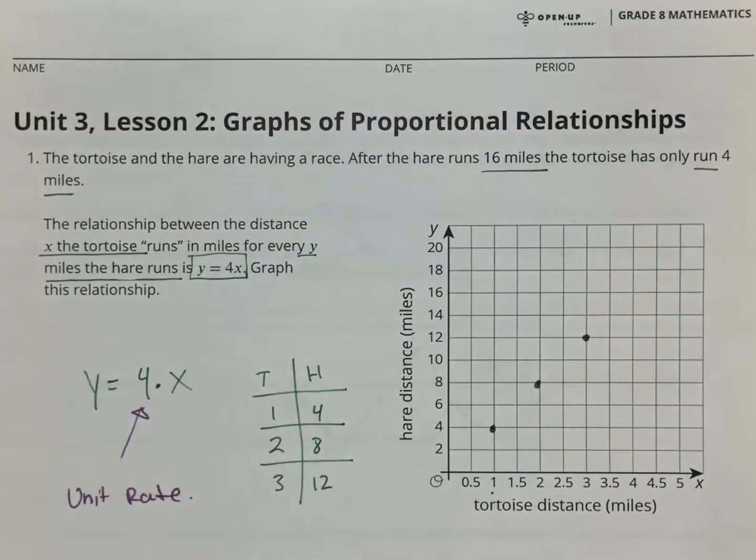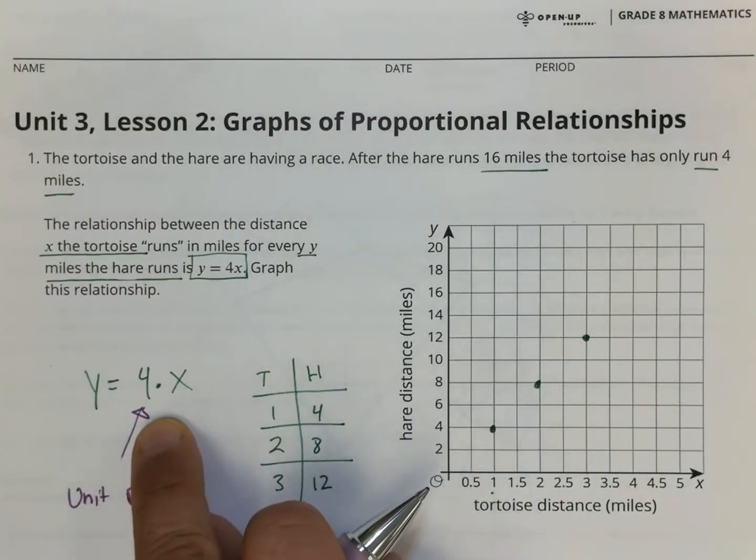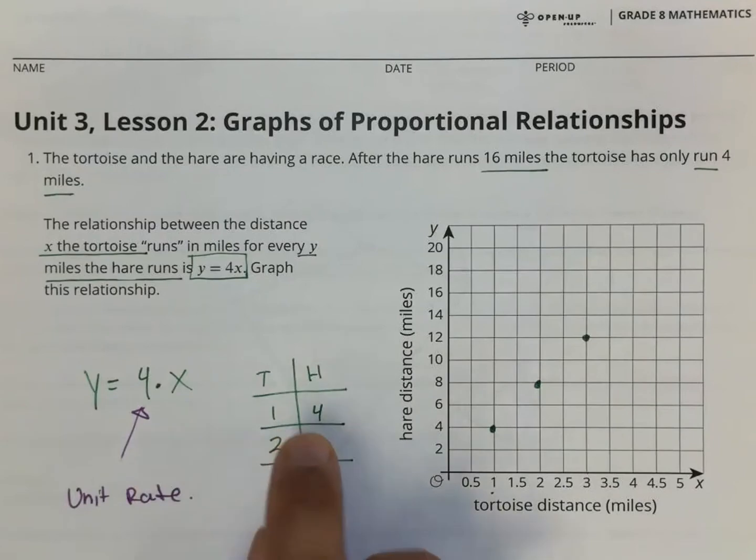So when you have it like that, y equals a number times x, the number that's being multiplied is the unit rate. So I know that for one, it's four.